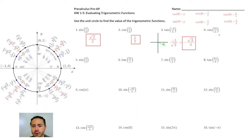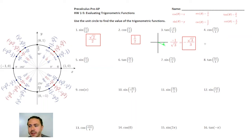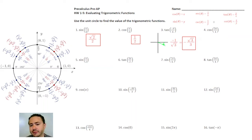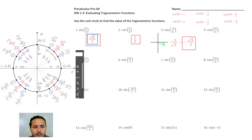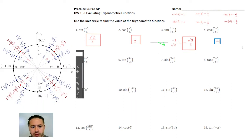Cosine of 3π over 4: look at the unit circle and you'll see 3π over 4 is in quadrant 2. That coordinate is negative √2/2 comma positive √2/2. Since cosine refers to the x-coordinate, it's going to be negative √2/2.